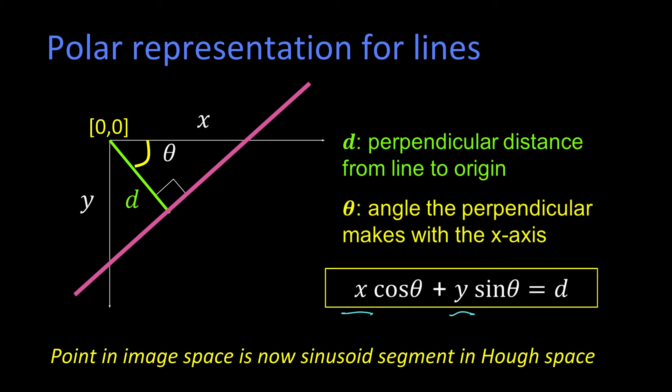Before, we had this beautiful duality where a point in image space was a line in Hough space, and a point in Hough space was a line in image space. But because we've introduced cosines and sines, it's still a duality, but it's no longer just simply between points and lines.